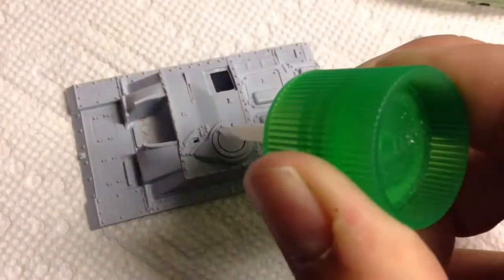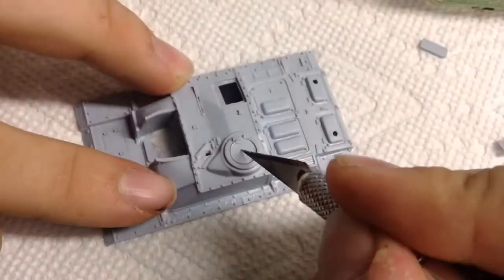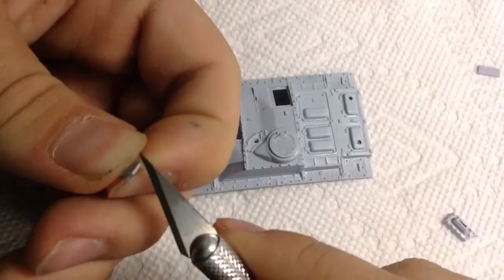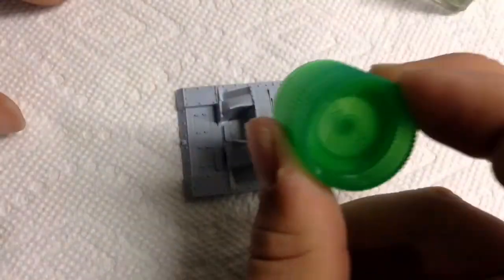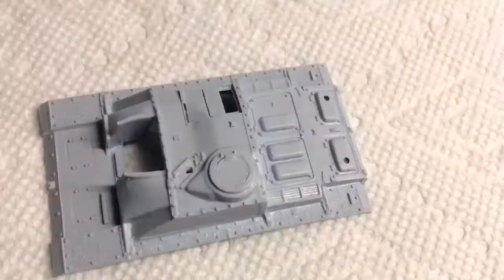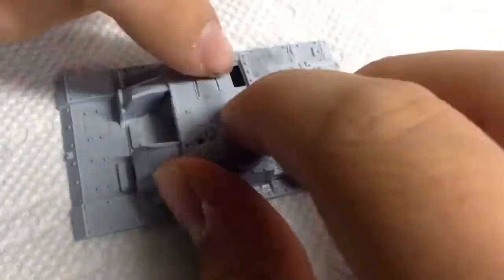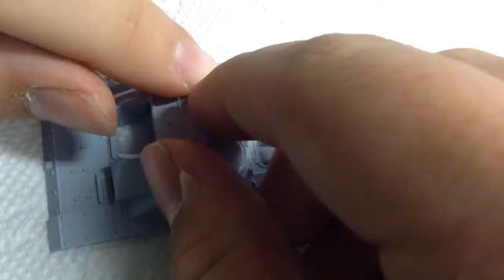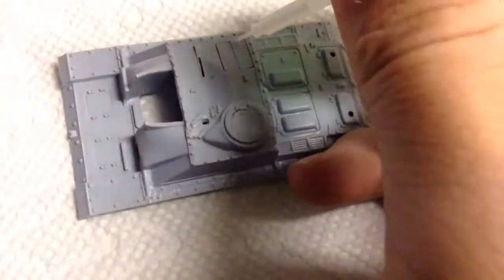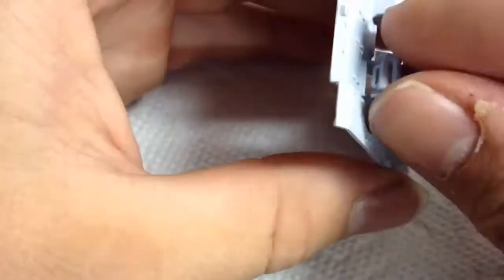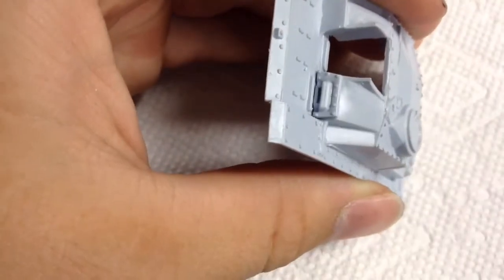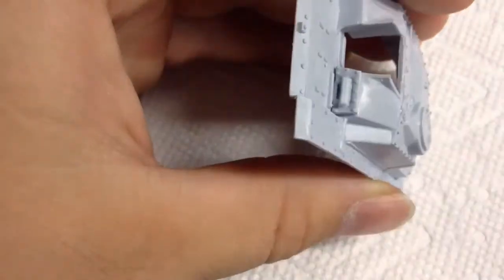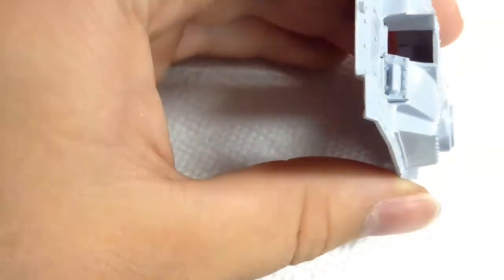Then I installed the small details on the hull, including hatches and other small details, such as the driver's vision area. I don't know what that's called. I don't know enough about tanks. I'm sorry.